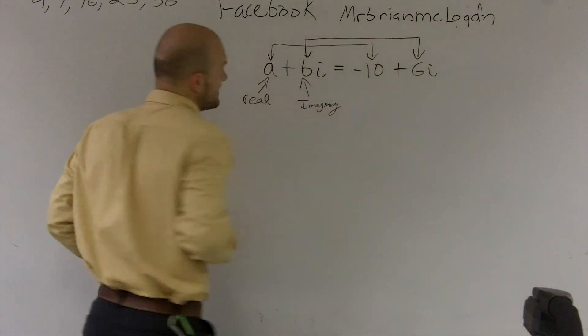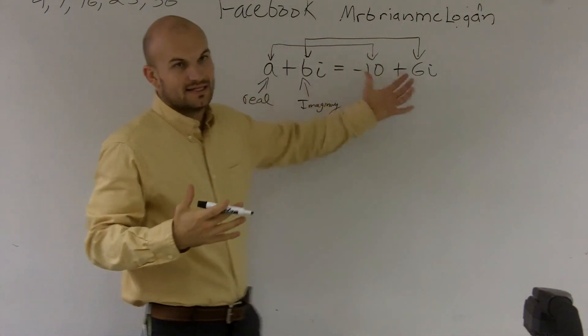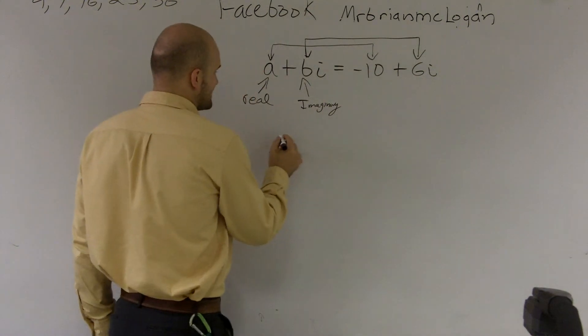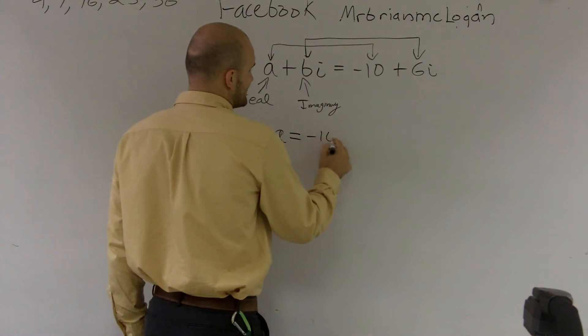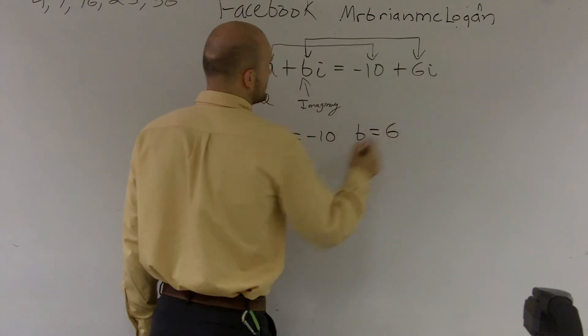So therefore, if I wanted to find the values for A and B that make these two equal to each other, I can say A is equal to negative 10 and B is equal to 6.